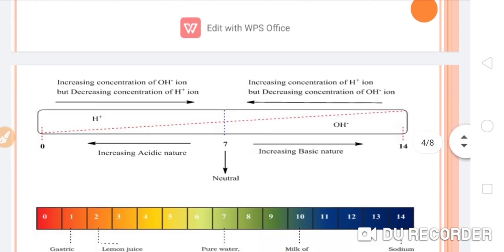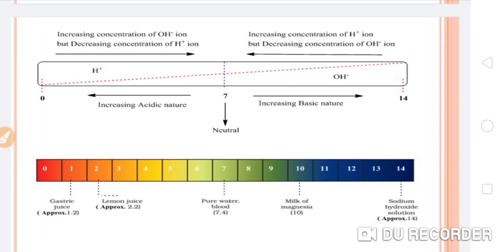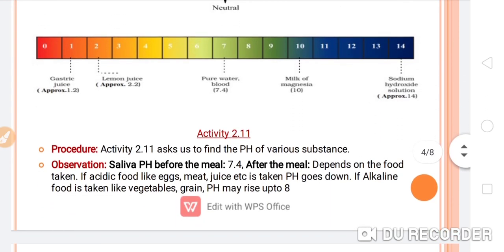Looking at the pH diagram: below 7, acidity increases; moving from 7 to 14, basicity increases as H⁺ ion concentration decreases. Some example pH values: gastric juice ≈ 1.2, lemon juice ≈ 2.2, pure water and blood ≈ 7.4, milk of magnesia, and sodium hydroxide solution at 14. Milk of magnesia is a weak base, and lemon juice is a weak acid because it is an organic acid. Gastric juice is a strong acid.